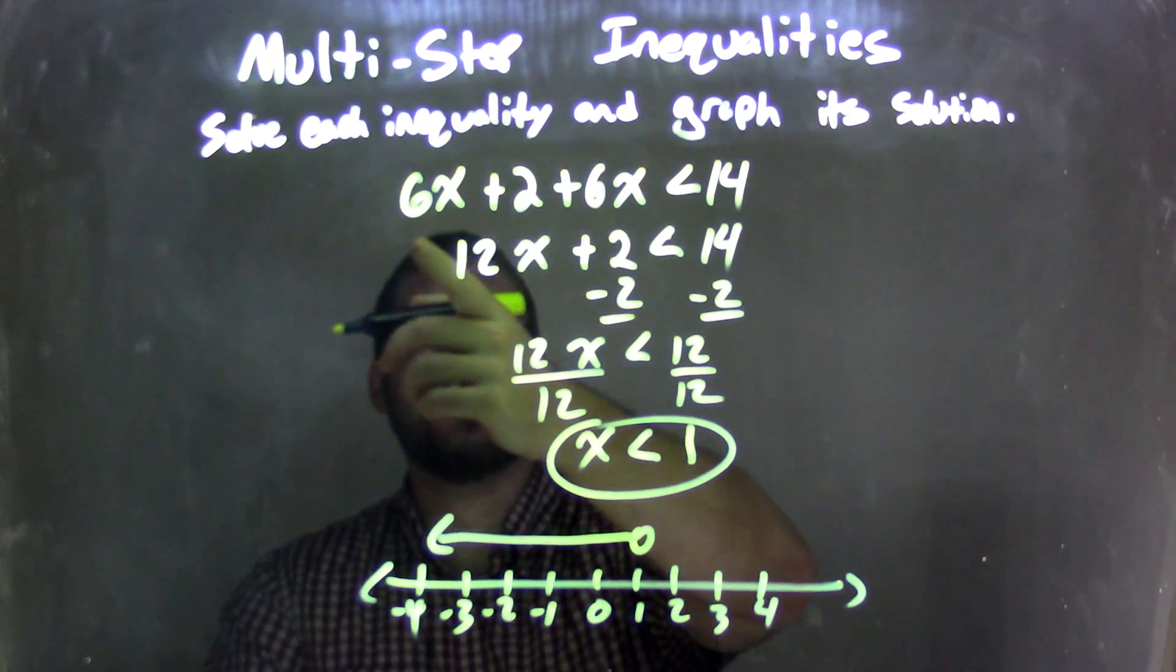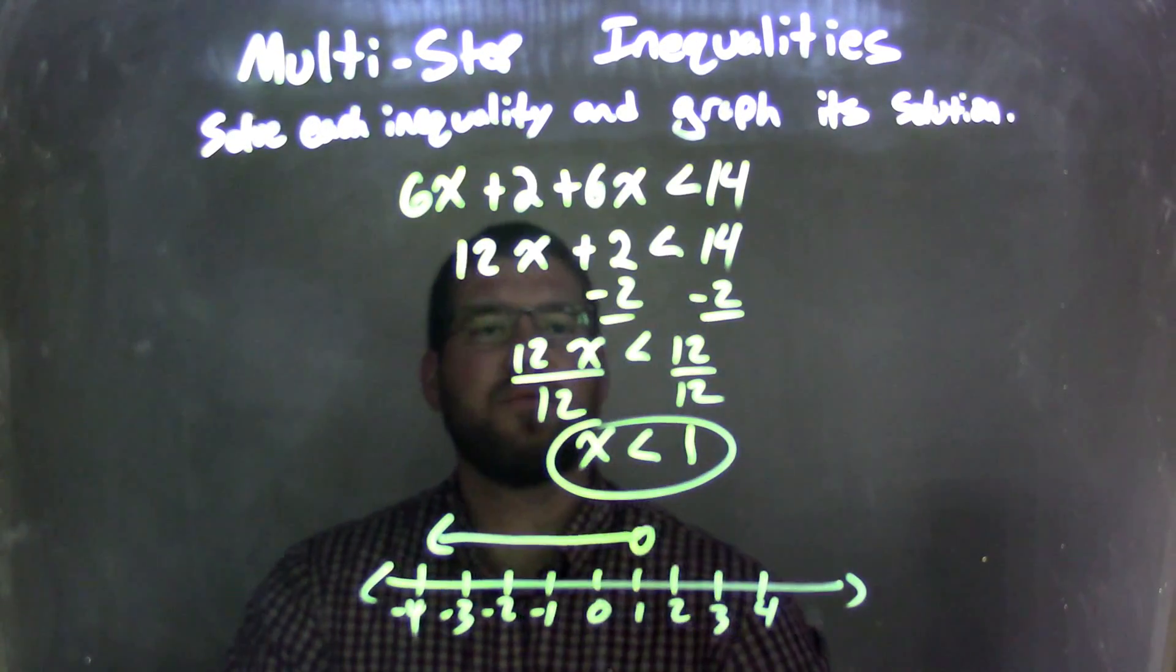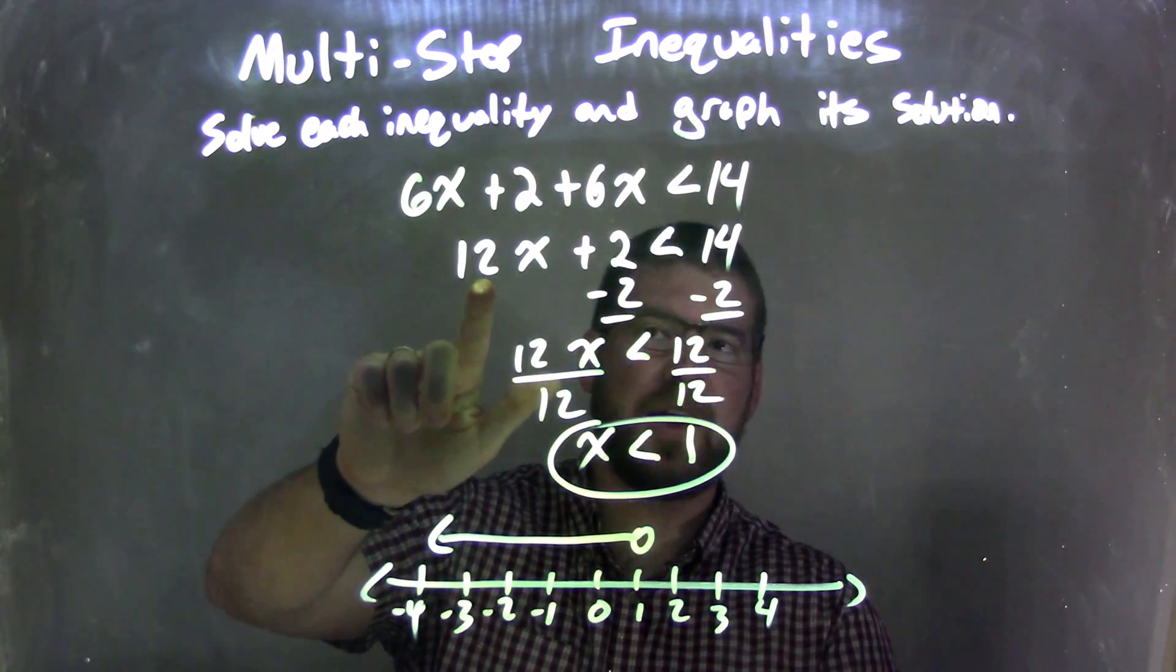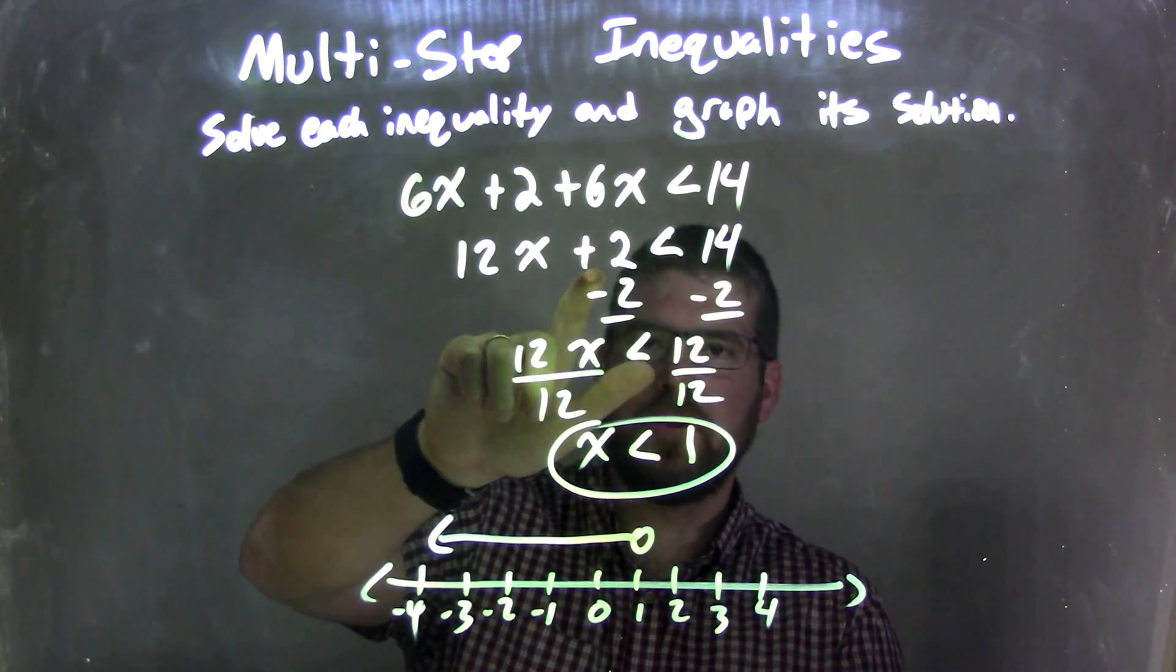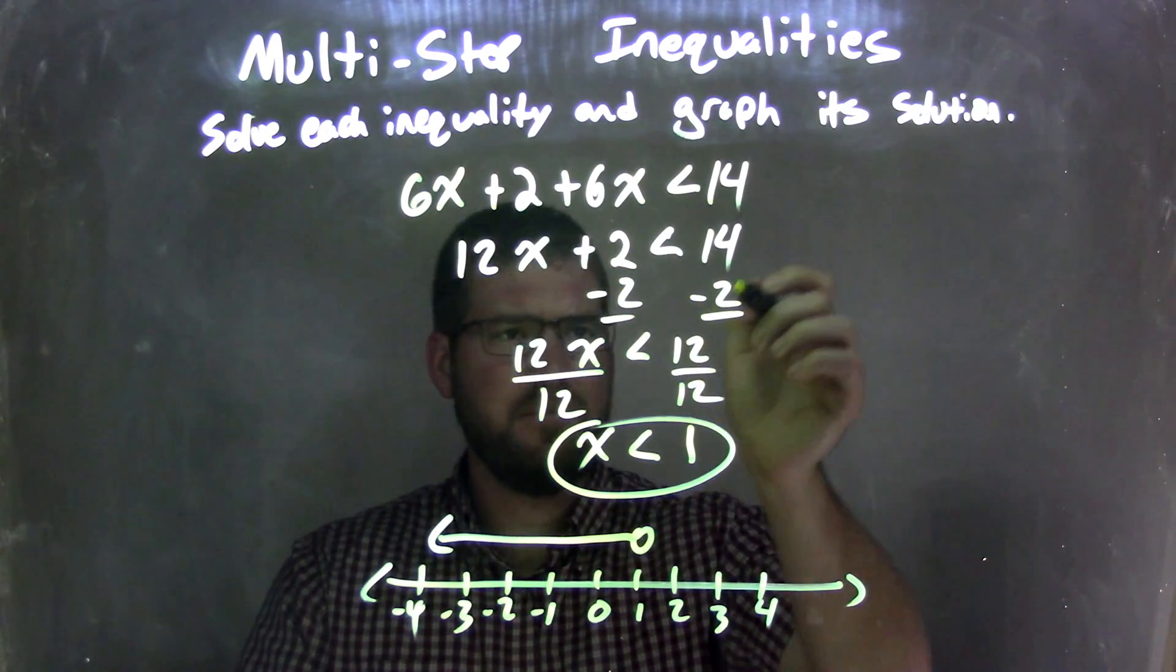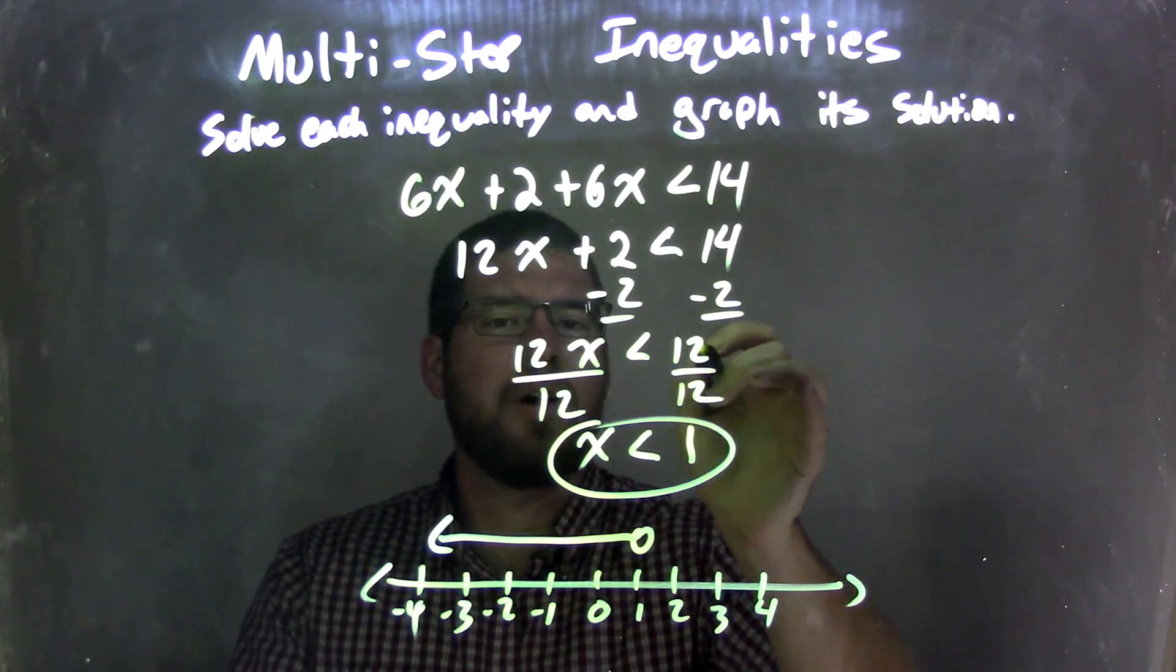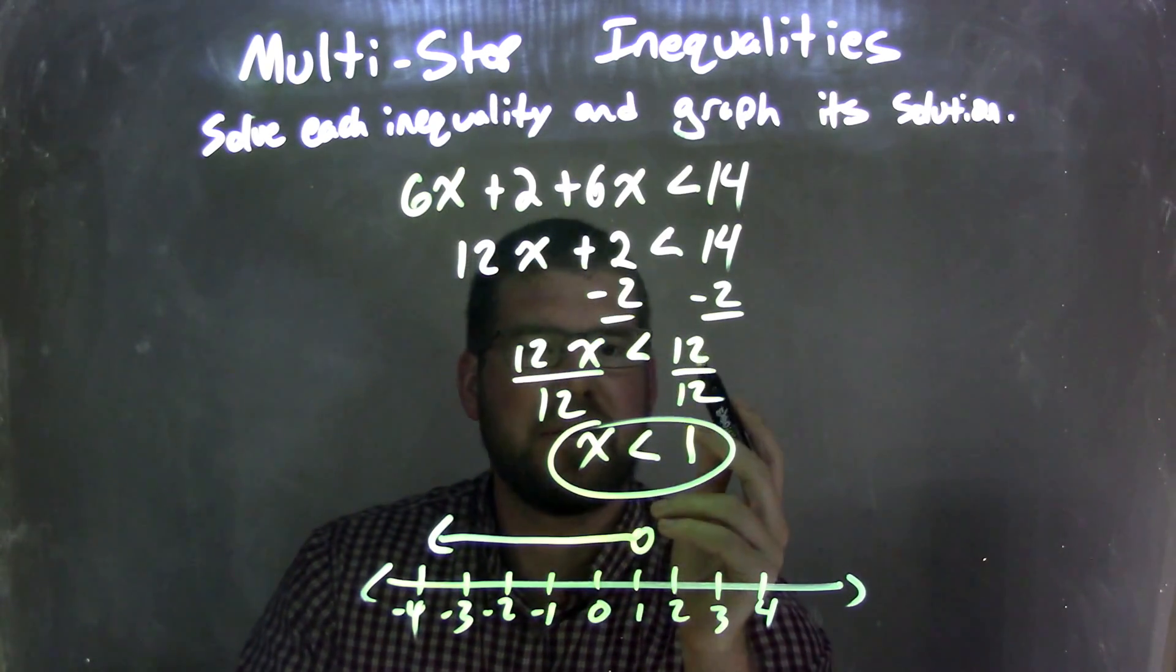So let's recap. We had 6x plus 2 plus 6x is less than 14. I combined the 6x's together to give me my 12x, adding them up, and 2 plus, this is the 2 right there. I then subtracted, excuse me, subtract 2 from both sides, leaving me with 14 minus 2 is 12, and then 12x on the left, and the less than sign is still there.